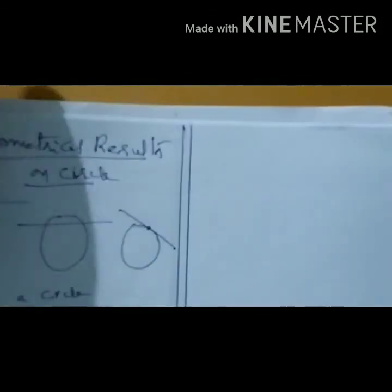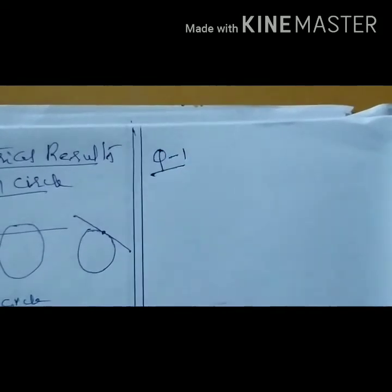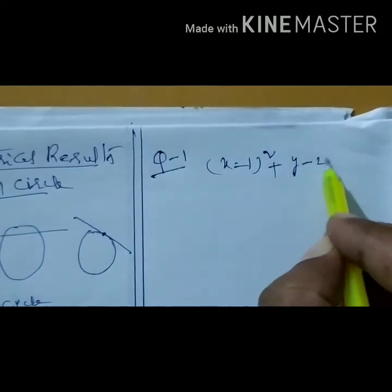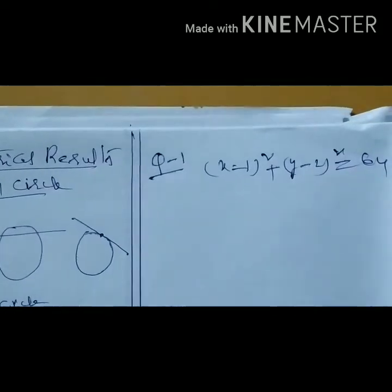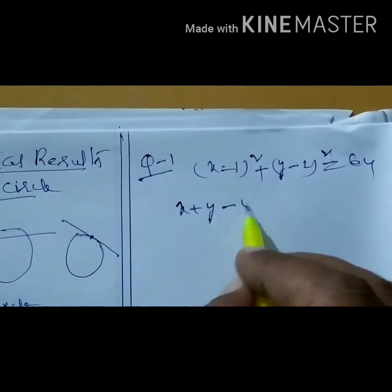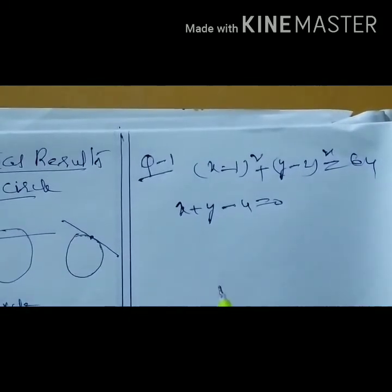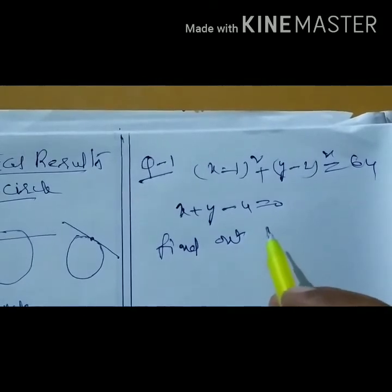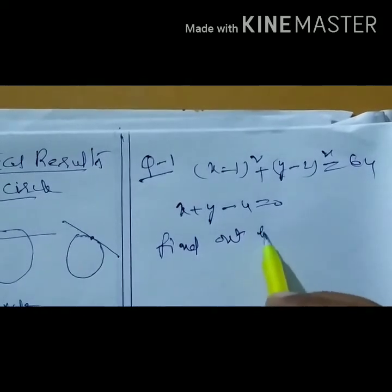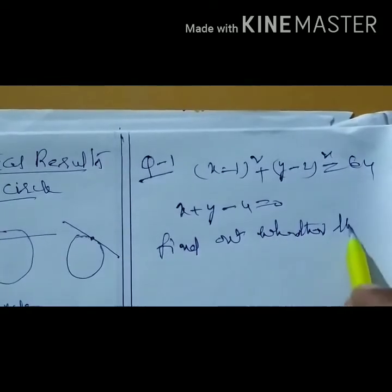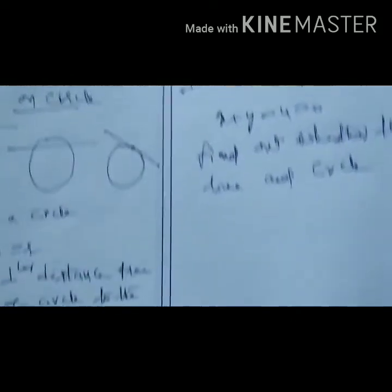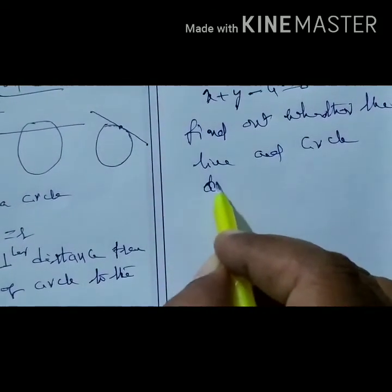Based on this concept, let us do one problem. Question number one: given the circle (x − 1)² + (y − 2)² = 64 and the line x + y − 4 = 0, find out whether the line and the circle touch each other or intersect.